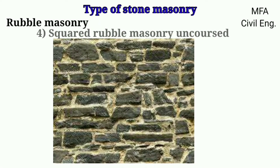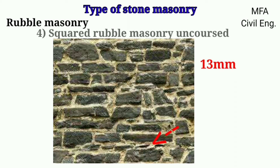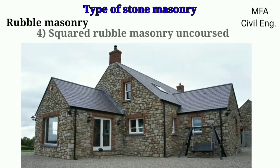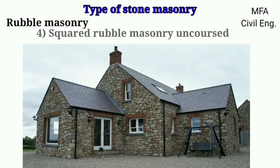In square rubble masonry, uncoursed, the squared stone means a stone whose edges have been made roughly straight. Squared does not mean that the stones are square in section. The stones are roughly dressed and are laid at random on their natural bed so that they are interlocked. The joints should not exceed 13 mm thickness, and the voids between stone blocks are filled with mortar and stone chips. This type of masonry is used for making residential buildings, public buildings, and boundary walls.